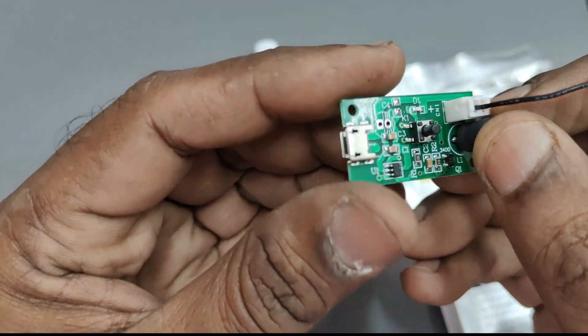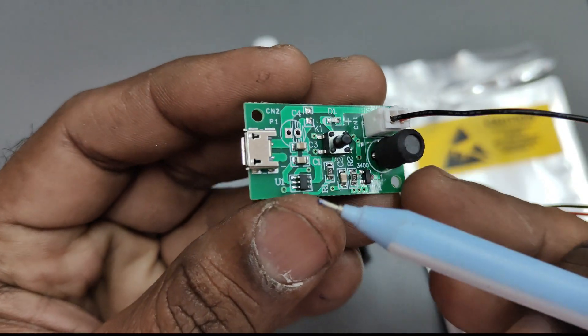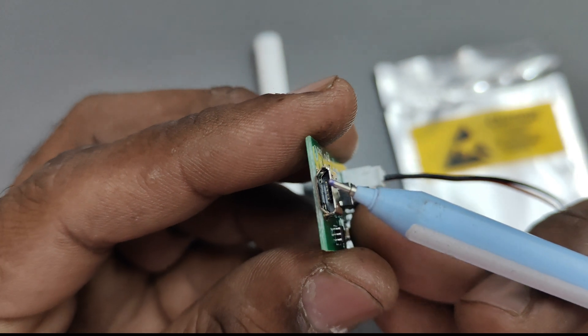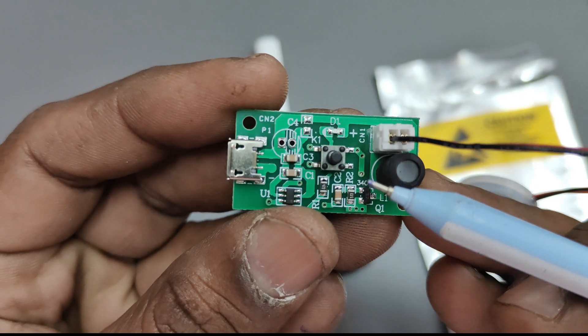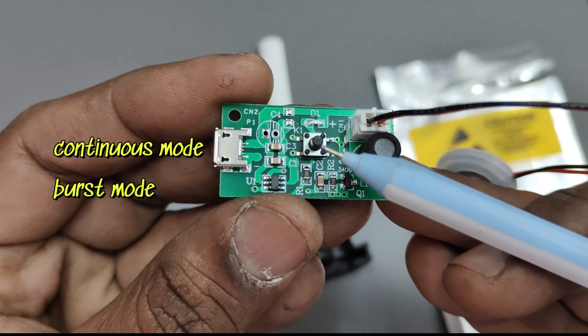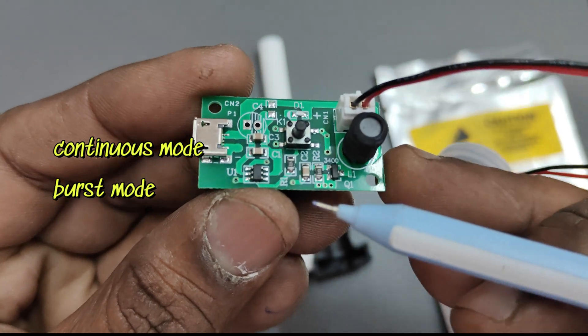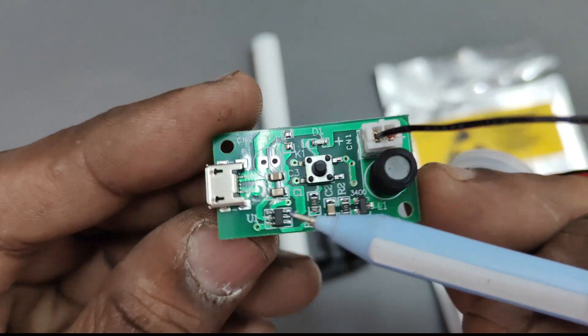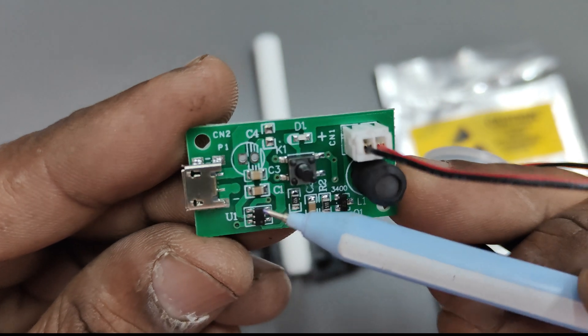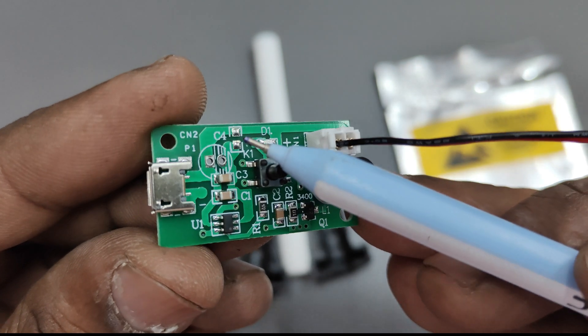It also has got a mini microcontroller, six-pin microcontroller, a push switch for continuous mode and burst mode. This is the six-pin microcontroller, the name is erased, number is erased.